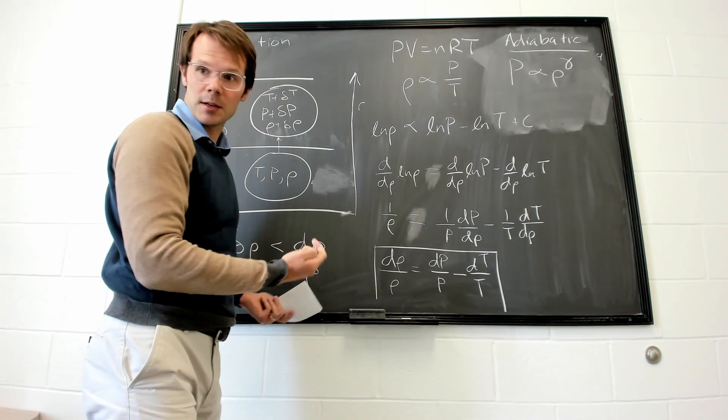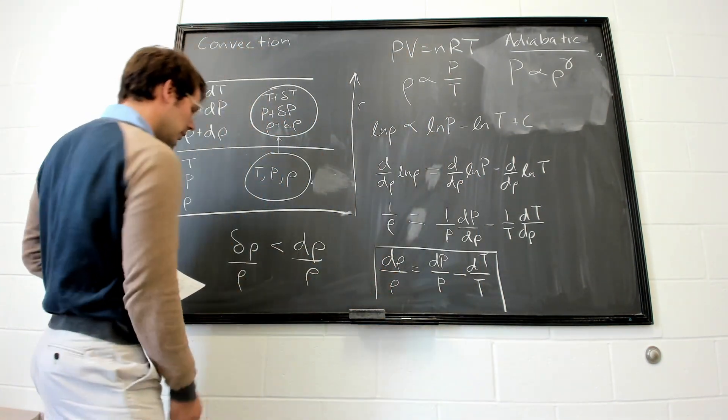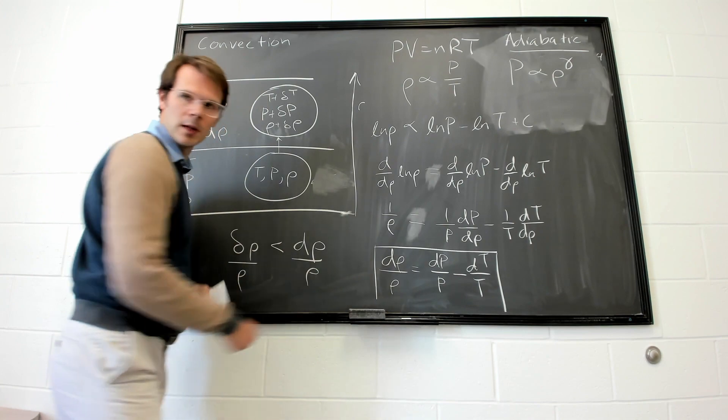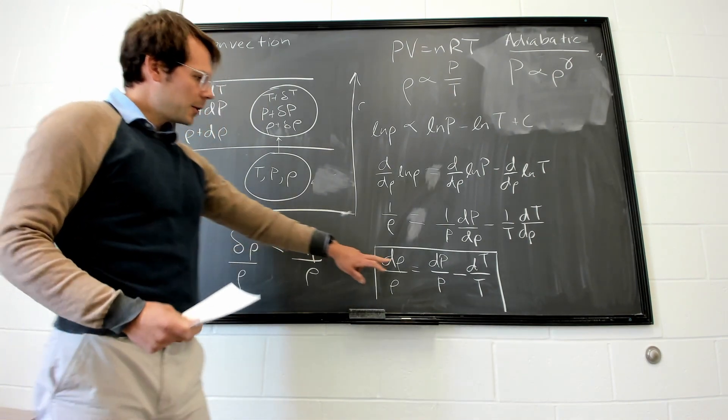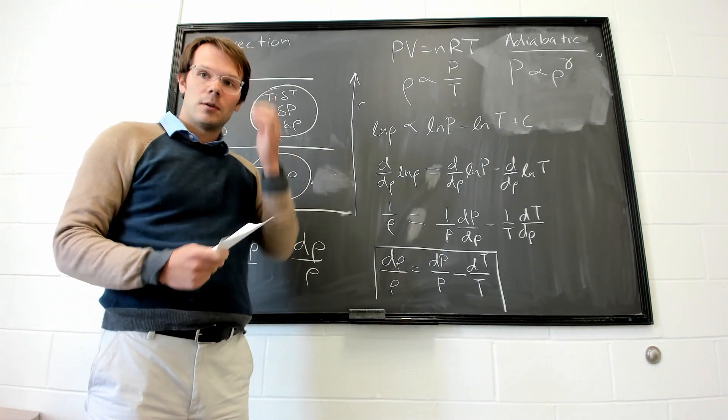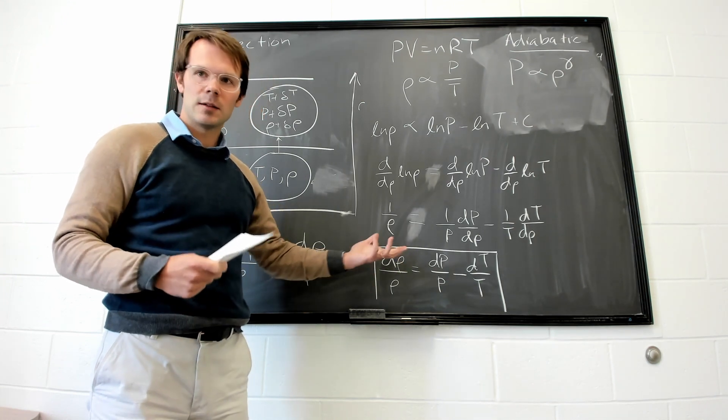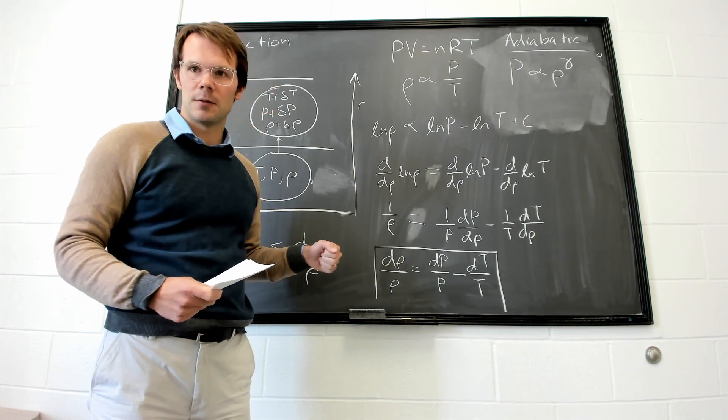So we get drho/rho equals dP/P minus dT/T. Great. We have, this is excellent. So we have our expression here.